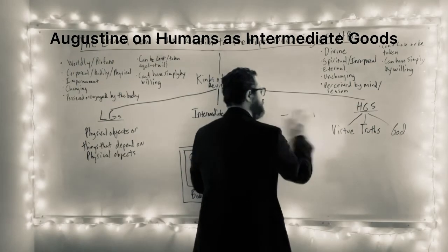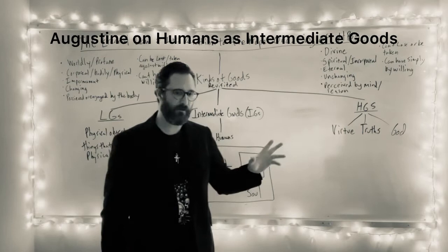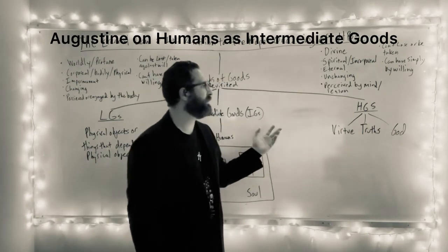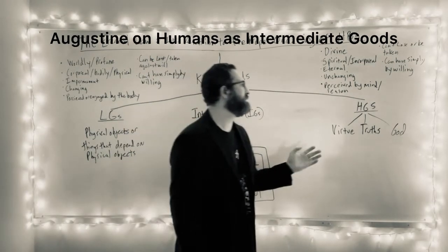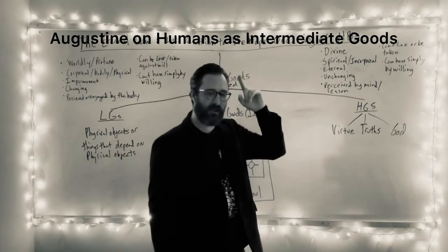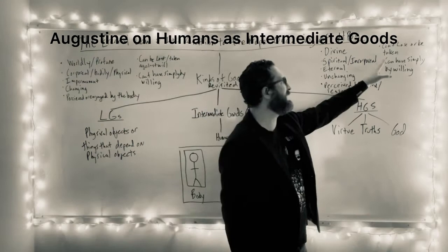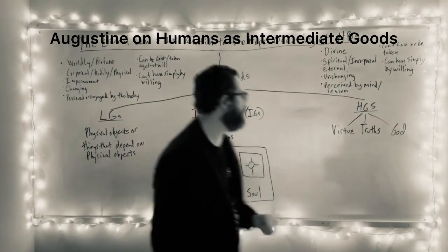But the fact that 2 plus 2 equals 4 is not perishable. Right? So, mathematical truths, moral truths, truth itself, you're contemplating truth itself. These are virtue, God. These are things that you know by the mind and not by the bodily senses. You can't lose these or these can't be taken from you, but you can have them simply by will.